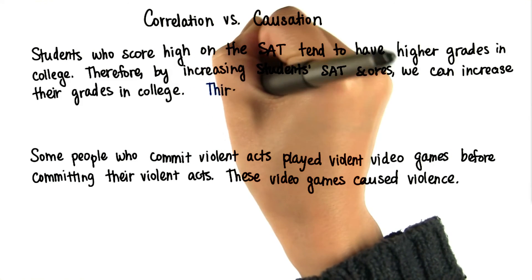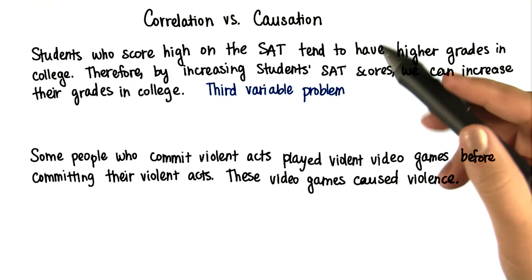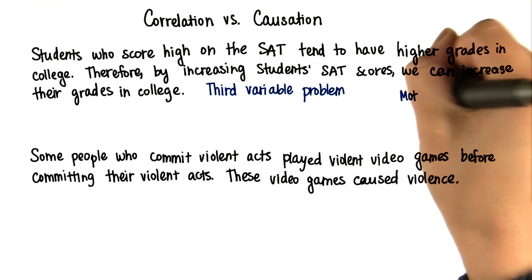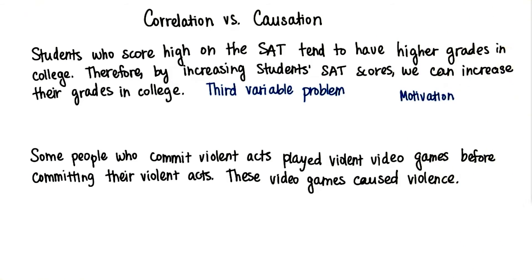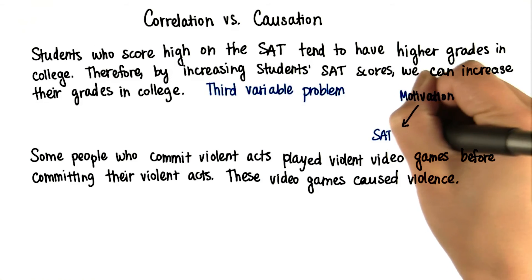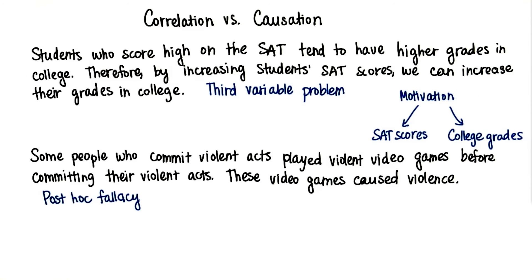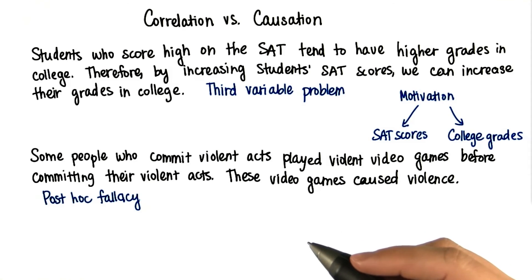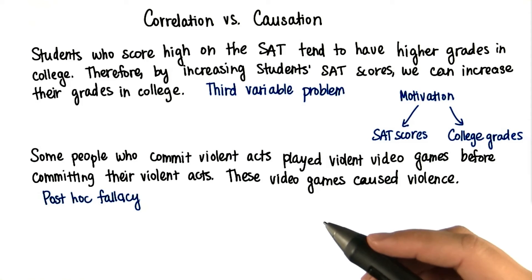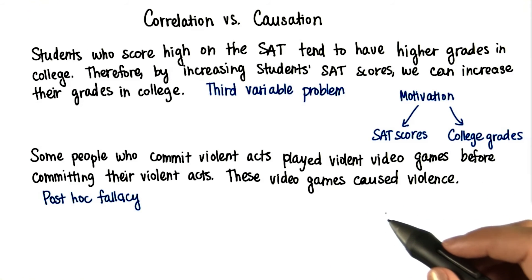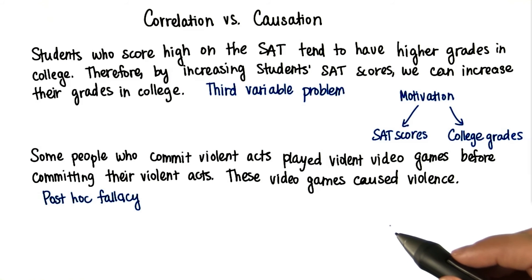This situation is called a third variable problem. It's not necessarily true that high SAT scores resulted in high grades in college. It could be that motivation and effort, intelligence, etc. was a third variable that influenced both SAT scores and college grades. And this situation is called a post hoc fallacy. Just because a person played violent video games before committing a violent act, this doesn't mean that the violent video games caused the violent acts. It could be that people who want to commit violent crimes also want to play violent video games. Certainly a simple correlation wouldn't be enough to determine this.